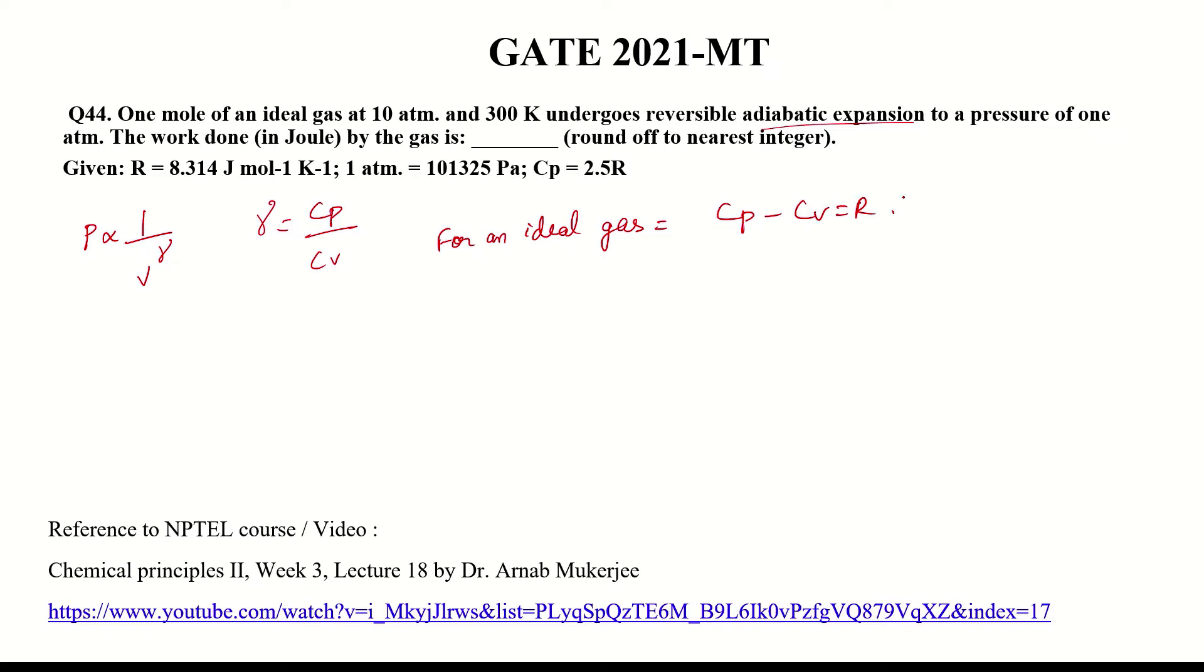To start, the initial pressure P₁ = 10 atm, final pressure P₂ = 1 atm, and initial temperature T = 300 K. These are the basic values given in the question.